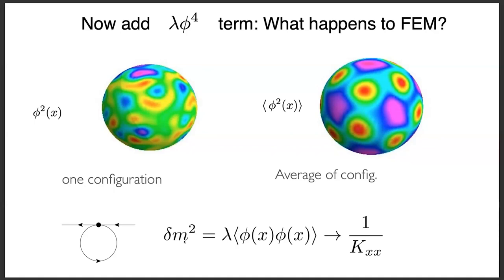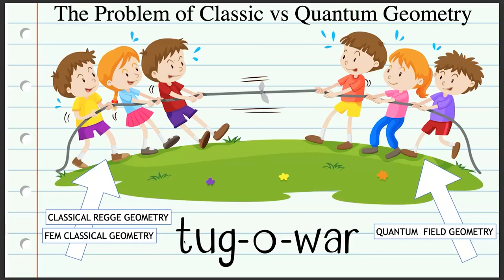Here's my cartoon of the situation: classical Regge geometry and classical finite element field theory are on one side; quantum field theory is on the other side. They have to agree on the geometry, and they don't naturally. You can take a classical triangulated space, use all of Regge's skill to know what the manifold is, then throw a quantum theory on it — and it starts to oscillate and doesn't have the geometry you thought. The only reason people haven't noticed this in lattice gauge theory is that a square lattice has so much symmetry — you can translate each square to another — so you could guess the geometry.